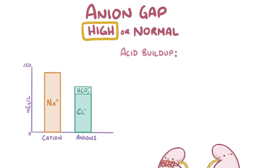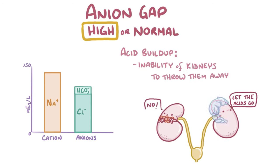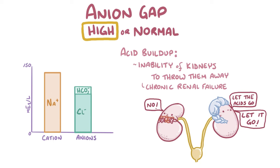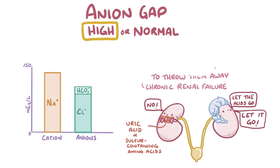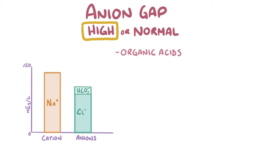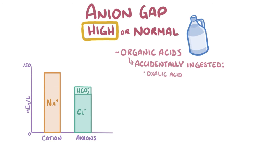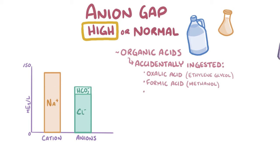Another way acids can build up in our blood is due to an inability of the kidneys to excrete them, even though they're produced in normal amounts. This can happen in cases of chronic renal failure, in which organic acids like uric acid or sulfur-containing amino acids can accumulate because they aren't excreted normally. In other cases, organic acids don't come from inside our bodies at all, but instead they're accidentally ingested. These include oxalic acid, which can build up after accidental ingestion of ethylene glycol, a common antifreeze; formic acid, which is a metabolite of methanol, a highly toxic alcohol; or hippuric acid, which comes from toluene, found in paint and glue.